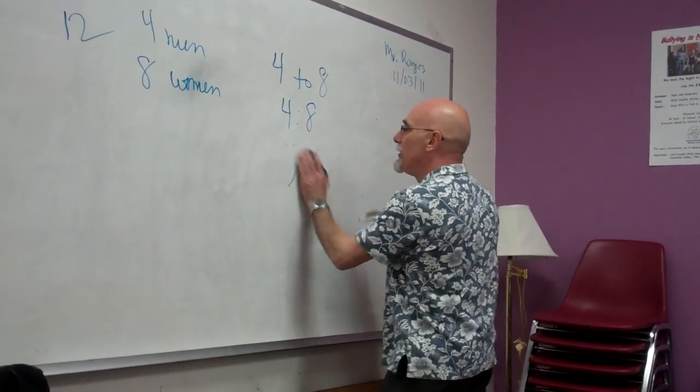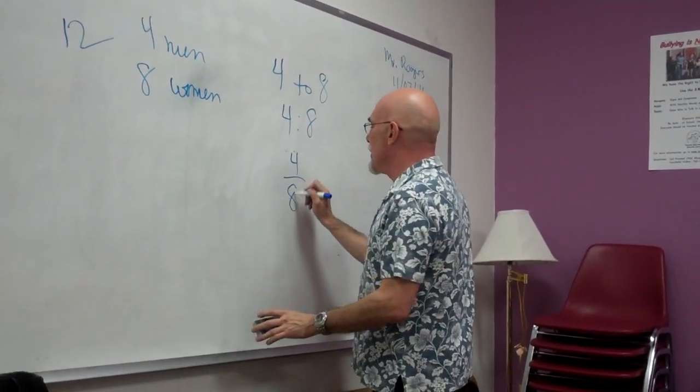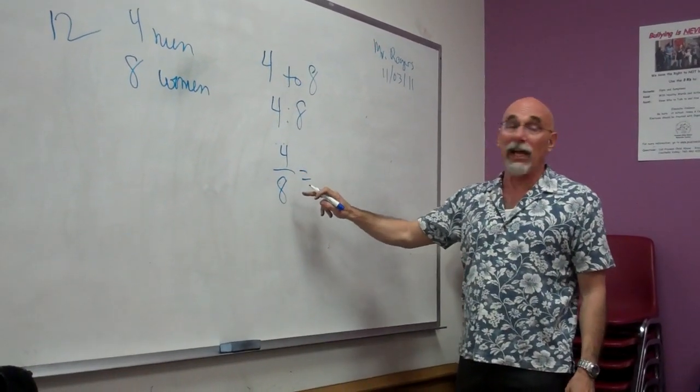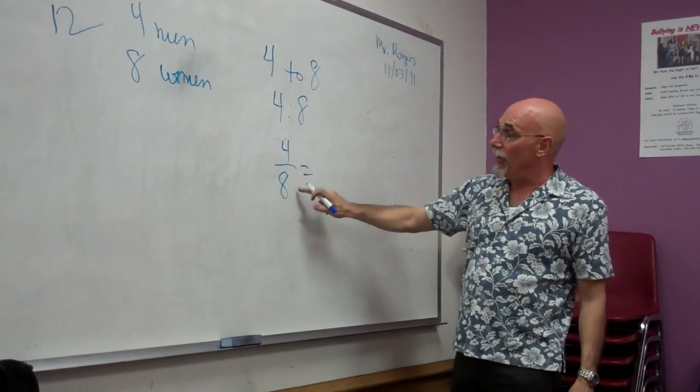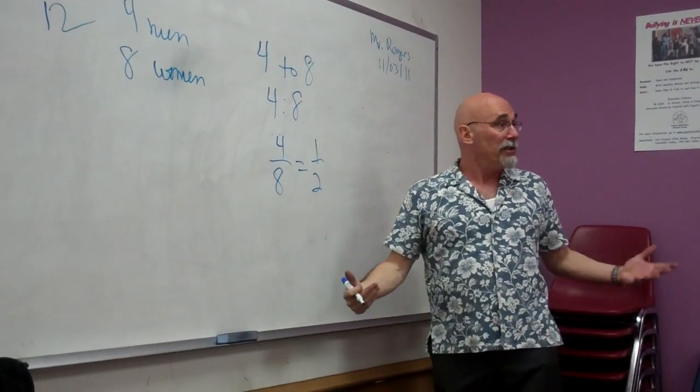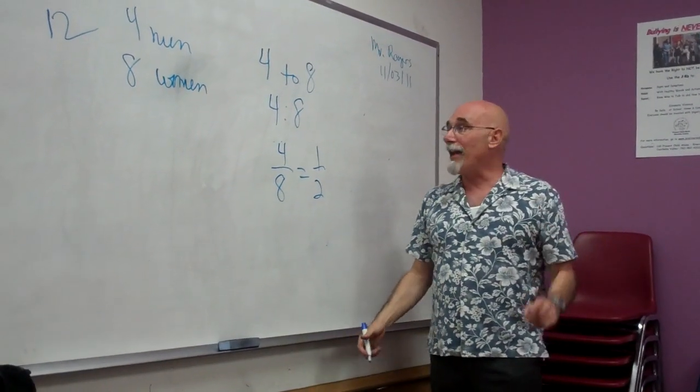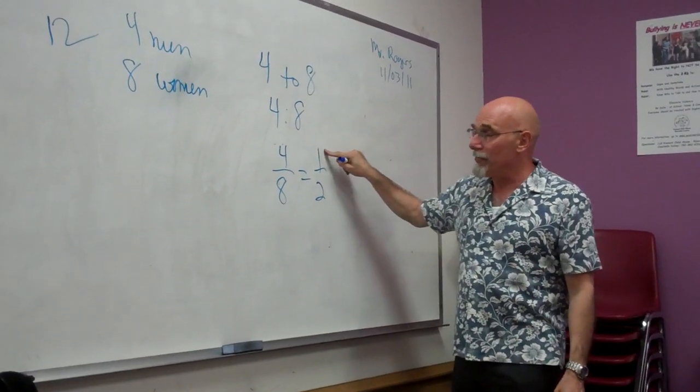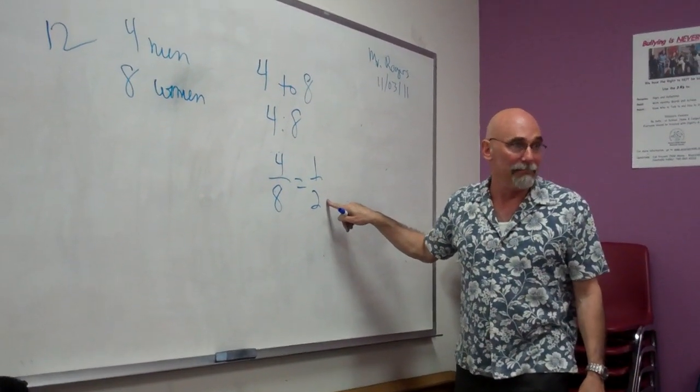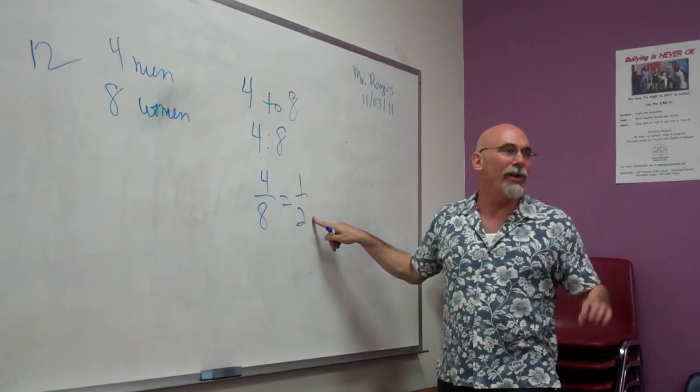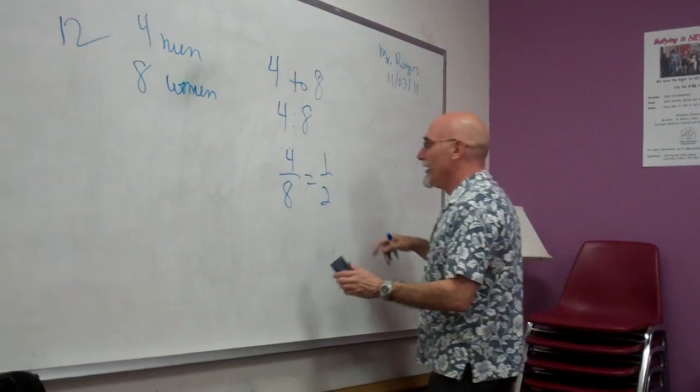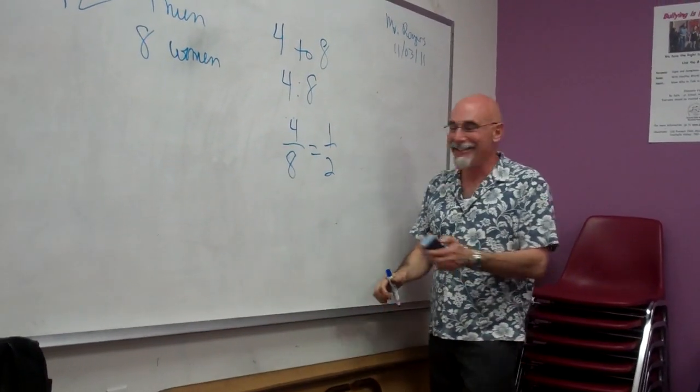Now, once you make it a fraction, you reduce it. Does anybody see a number that goes into... Okay, so two goes into both, and four. If you see right away it's four. Four goes into four, one. Four goes into eight, two. It's one to two. So, what that means is, for every one man in this room, there are two women.